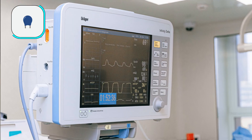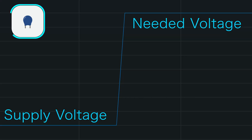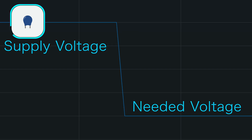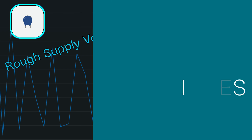Let's say we have a device that we never want to turn off — maybe something medical — but it's hooked up to an unstable power source. If we connect a very strong capacitor in parallel with the medical device, anytime the voltage drops off, the excess in the capacitor will be supplied to make up the difference. And if the voltage goes too high, which would normally burn out the device, the capacitor will take the extra power instead, smoothing out the electricity and making it nice and even for the device.